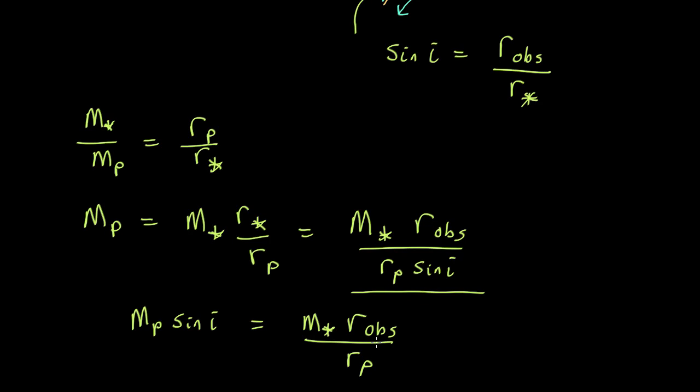And if you look at many tables of exoplanets you can find on the web, you'll find that they don't actually tell you what the mass of the planet is. What they tell you is mass of the planet times the sine of the inclination angle. Because that's normally all you can measure. You don't know this value.